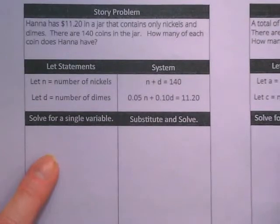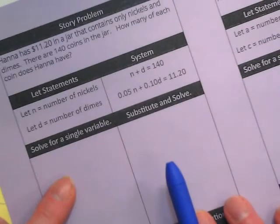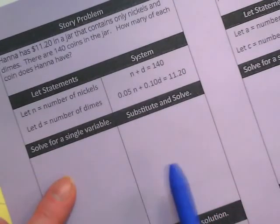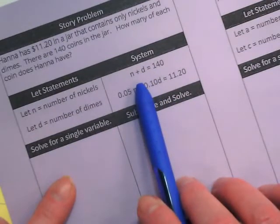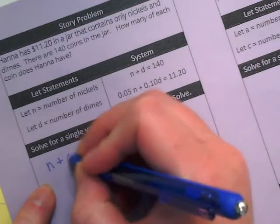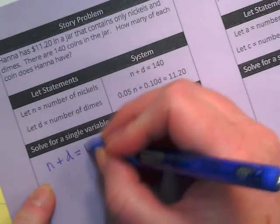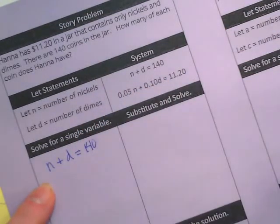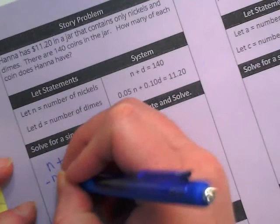So we need to solve for a single variable. I always take the easiest one, and the easiest one here is this top one, because we're not dealing with decimals yet. N plus D equals 140. I've solved it both ways for N or D. What do you guys want to do? Do you want N or D to be isolated? D. So let's subtract the N.